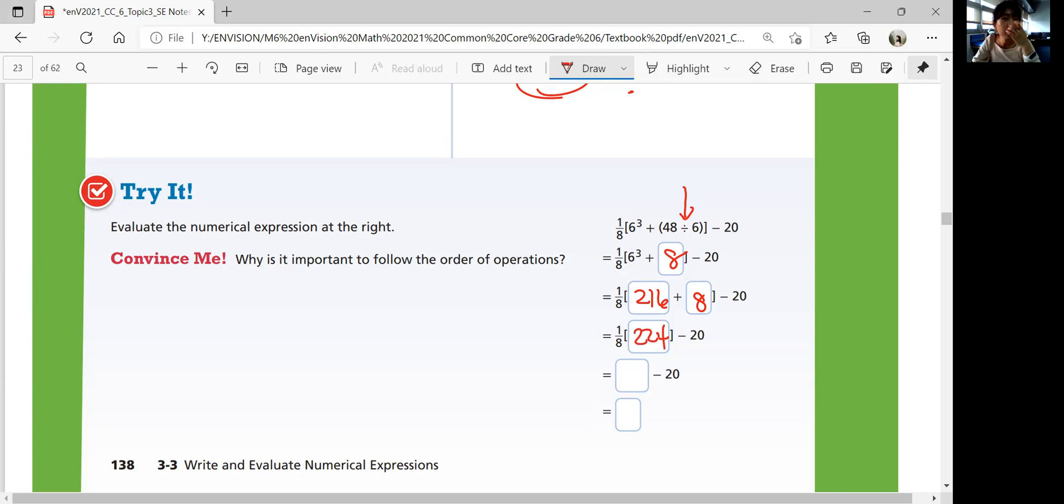And then what do you do? You have to do the bracket, but also multiplication first. 224 divided by 8 is 28. And then you subtract them. 28 subtract by 20 is 8. So the final answer is 8.